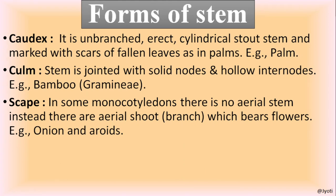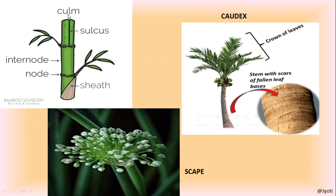The next form of stem is culm. Here the stem is jointed with solid nodes and hollow internodes. The best example is bamboo. You can see the node from where leaves and branches are developed, and in between two nodes there is an internode. The nodes are solid but the internodes are hollow. Such type of stem is called culm.